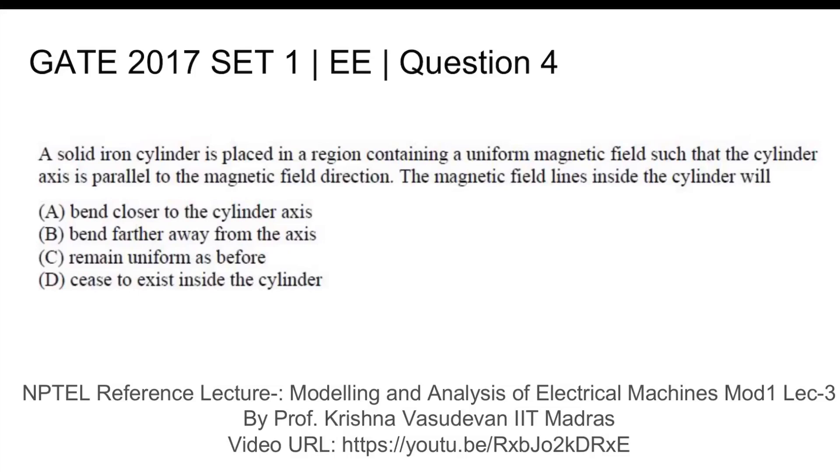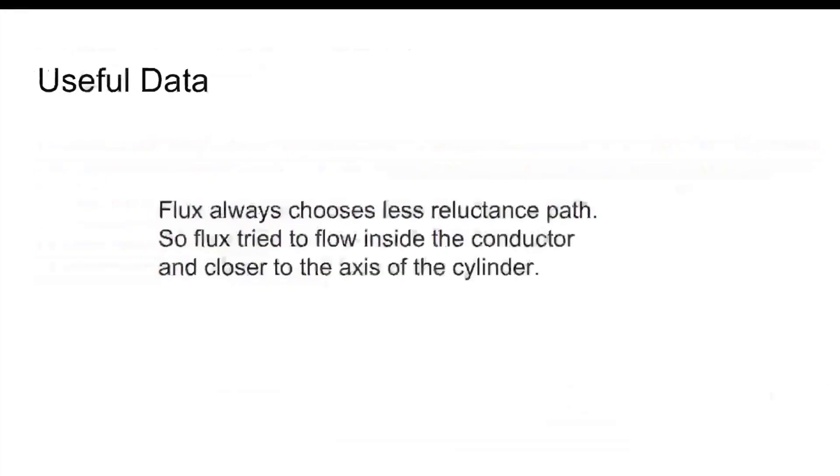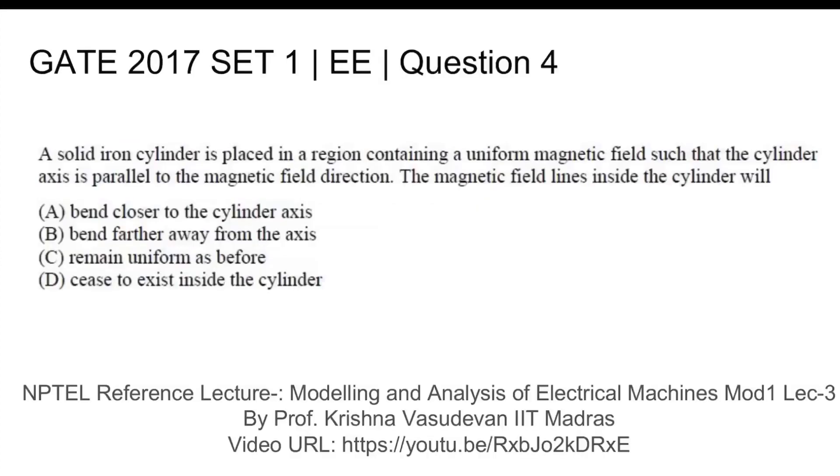Four options are given. Now in order to answer this question we need some information. Let's see some useful data: flux lines always choose lesser reluctance path, so just like current chooses least resistance path, the magnetic flux lines also try to choose lesser reluctance path.